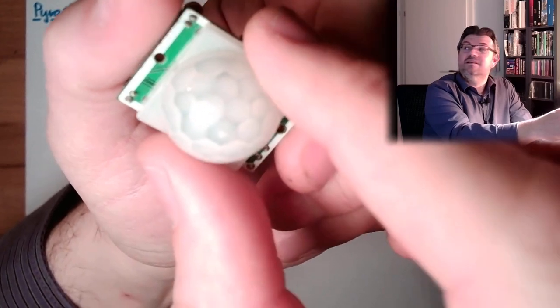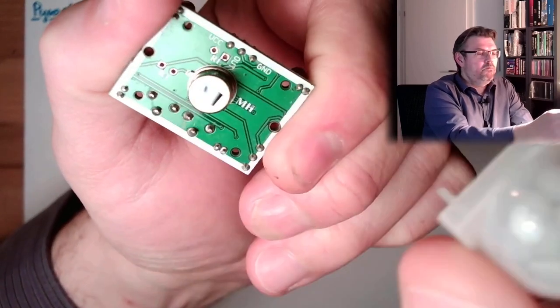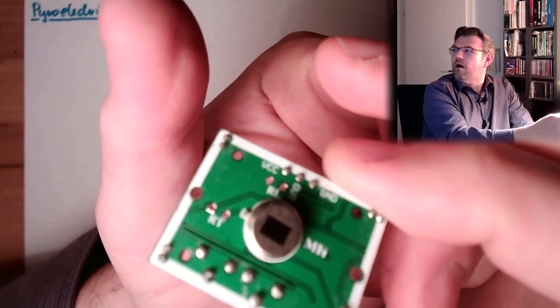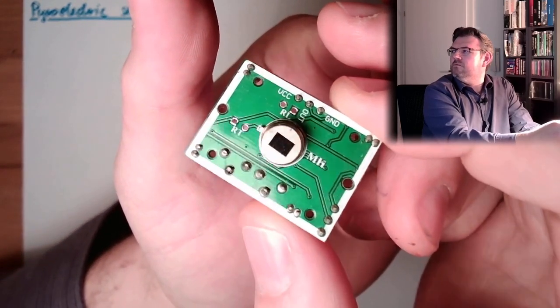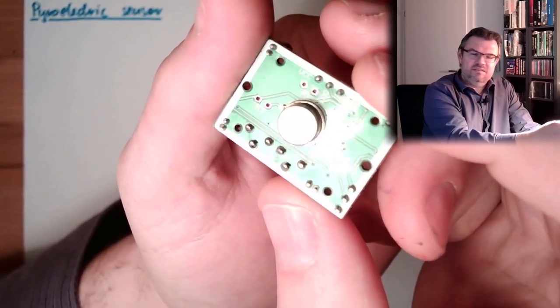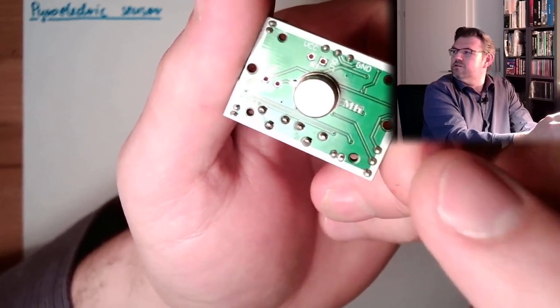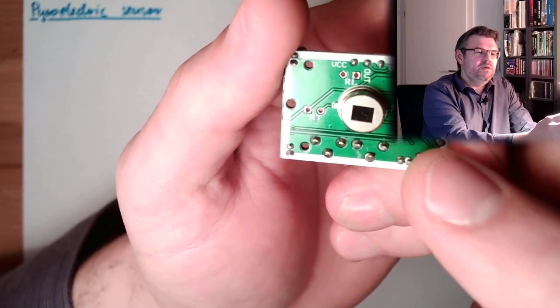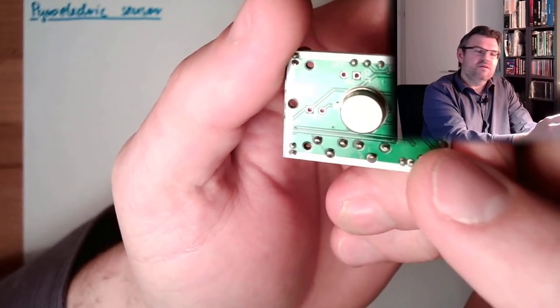How fancy it is looking underneath. Aha. Round thing with a black window. Not that fancy, right? This is the actual sensor. This is the actual PIR sensor. Pyroelectric infrared sensor.